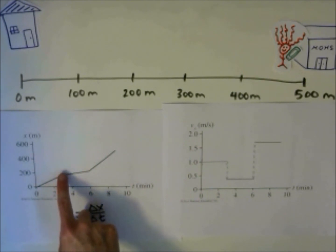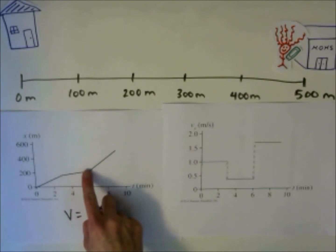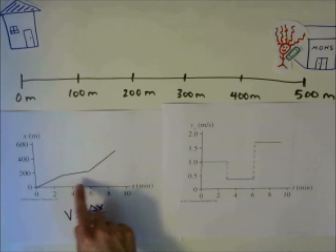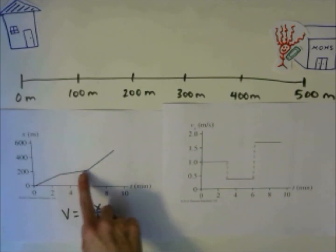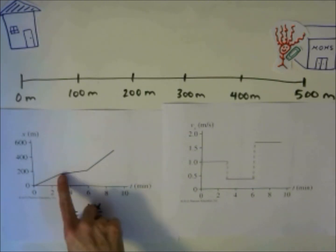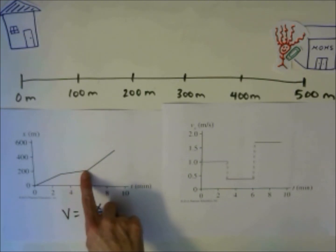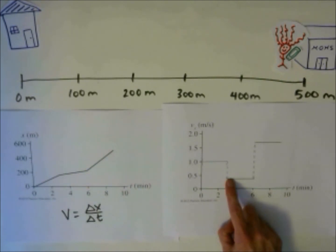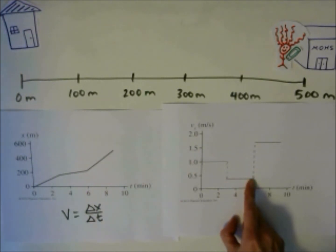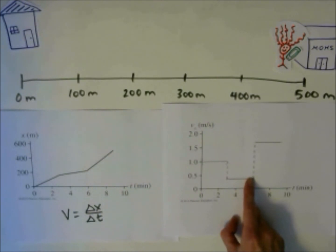Then, for the next section from 3 minutes to 6 minutes, you can find the slope of the line. It is less than 1 — it's about 0.4 meters per second. It's a constant velocity, so on the velocity-time graph it looks like a flat line at around 0.4 meters per second for those minutes.